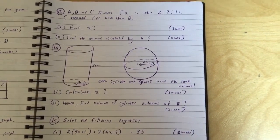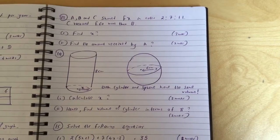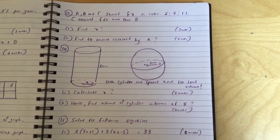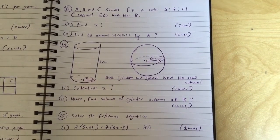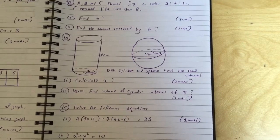Question 14: A cylinder with radius x and height 8 and a sphere with radius 6 centimeters both have the same volume. Calculate x. Part 2: Hence find volume of cylinder in terms of pi.